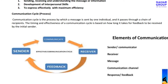Let us come to the communication cycle. The communication cycle is the process by which a message is sent by one individual and it passes through a chain of recipients — the people who are receiving the message. The timing and effectiveness of the communication cycle is based on how long it takes for feedback to be received by the initial sender.